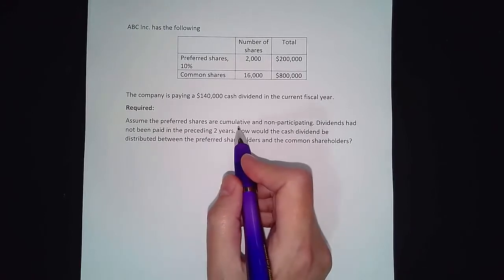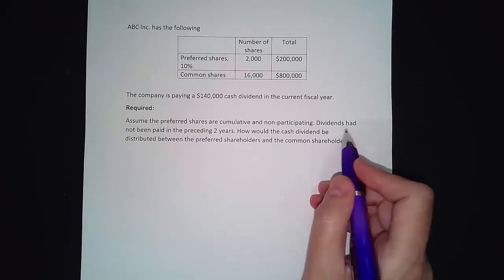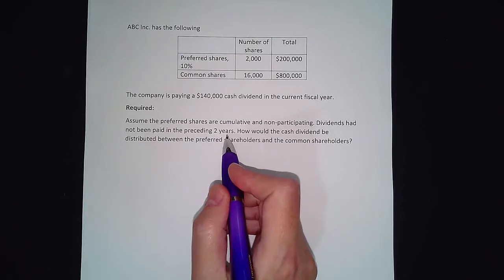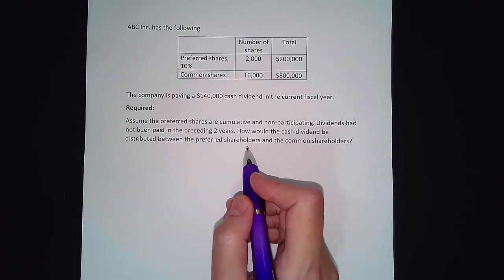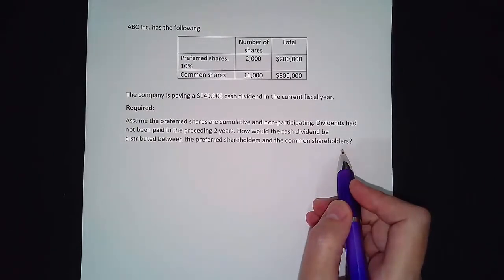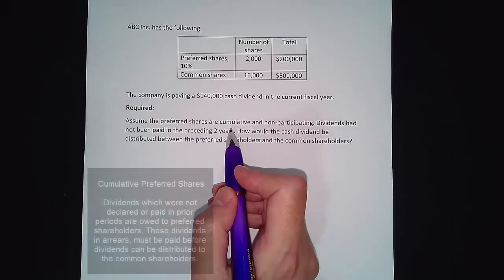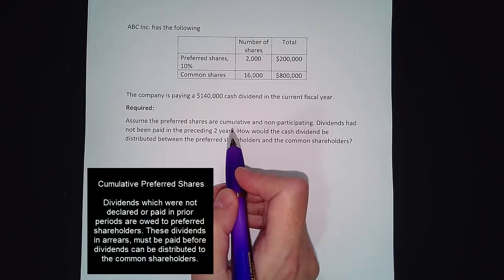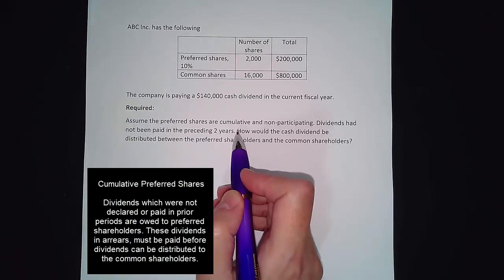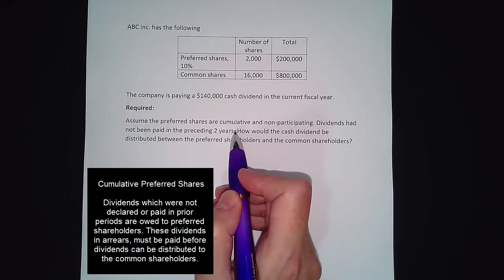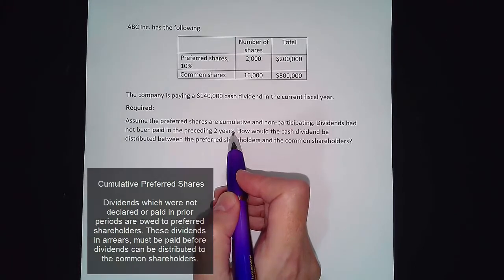Assume the preferred shares are cumulative and non-participating. Dividends had not been paid in the preceding two years, which means that the dividends are currently in arrears. When shares are cumulative, it means that any dividend which was missed and not paid in the past is owed to the preferred shareholders, and they have to be paid out before the current dividend is paid to the preferred shareholders and before any dividend is paid to the common shareholders.